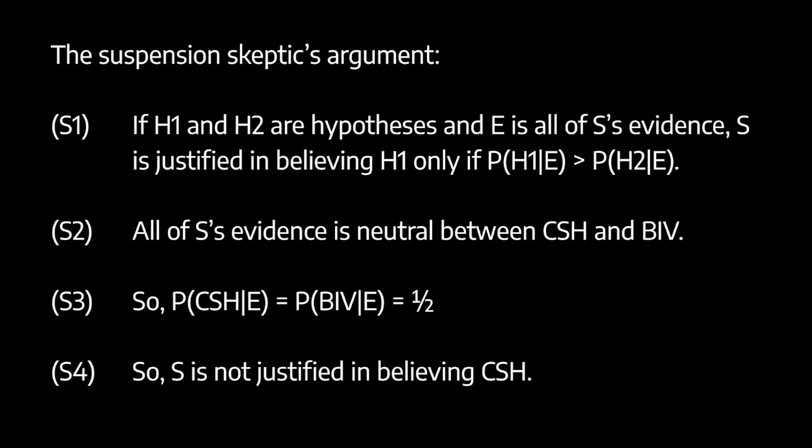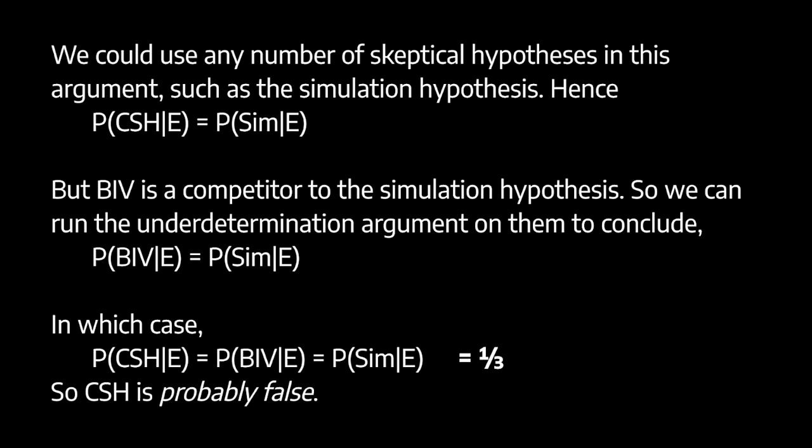Nothing in this argument depends on the brain in the vat hypothesis specifically — we could run the same argument with a different skeptical hypothesis, such as the simulation hypothesis: the view that I am an electronic being in a simulation run on a powerful supercomputer. If we take the simulation hypothesis, we get the result that the probability of the common sense hypothesis given e equals the probability of the simulation hypothesis given e. Skeptics have appealed to a variety of different skeptical hypotheses historically.